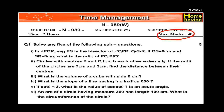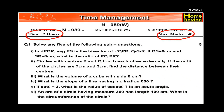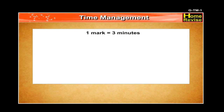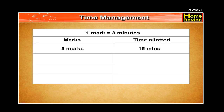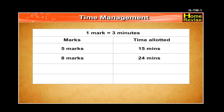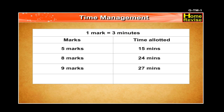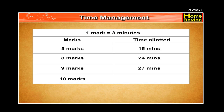The total time allotted for the paper is 2 hours, which is equal to 120 minutes. If you calculate, we have 3 minutes for every one mark. Thus, for a question of 5 marks the time will be 15 minutes, for 8 marks it will be 24 minutes, for 9 marks it will be 27 minutes, and for 10 marks it will be 30 minutes.